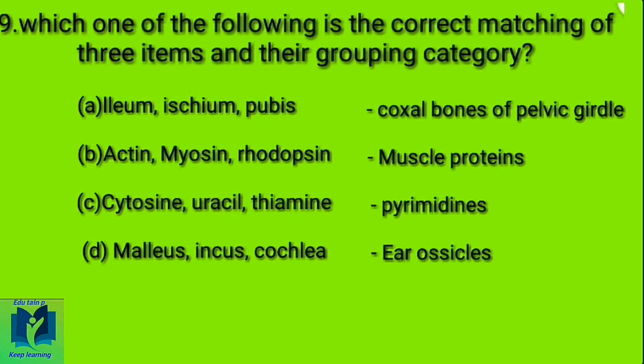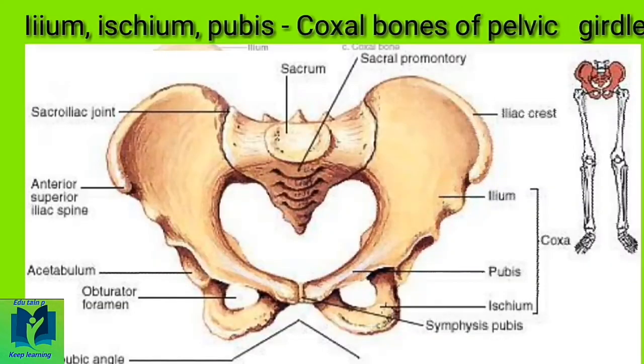Which one of the following is the correct matching of three items and their grouping category? Option A: Ilium, ischium, pubis — coxal bones of pelvic girdle. Option B: Actin, myosin, rhodopsin — muscle proteins. Option C: Cytosine, uracil, thiamine — pyrimidines. Option D: Malleus, incus, cochlea — ear ossicles. Answer: Ilium, ischium and pubis form the coxal bones of pelvic girdle.